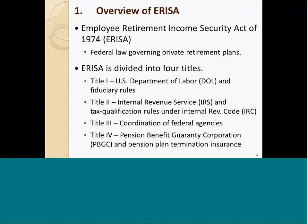ERISA is divided into four pieces. You have Title I, the Department of Labor piece, what we typically refer to as ERISA fiduciary law. Title II covers all the Internal Revenue Code provisions. Title III relates to the coordination of federal agencies. And Title IV is the PBGC, which is Pension Plan Termination Insurance.